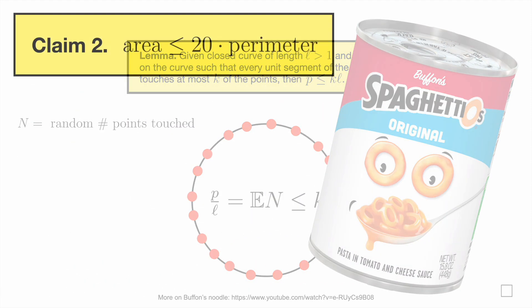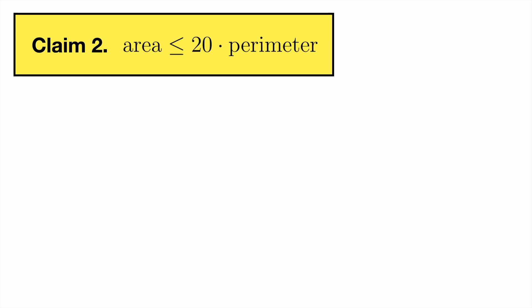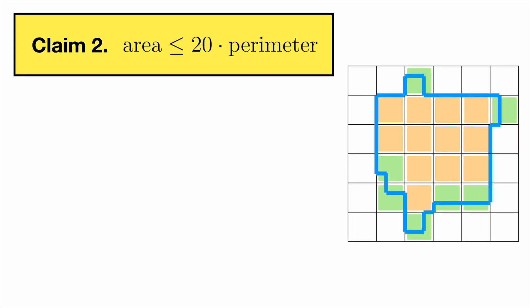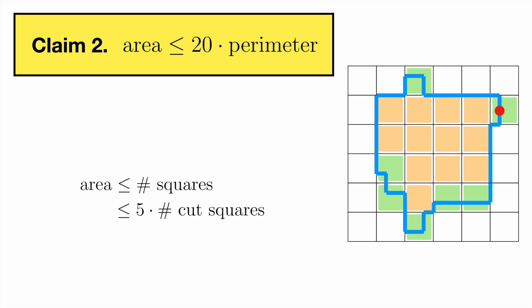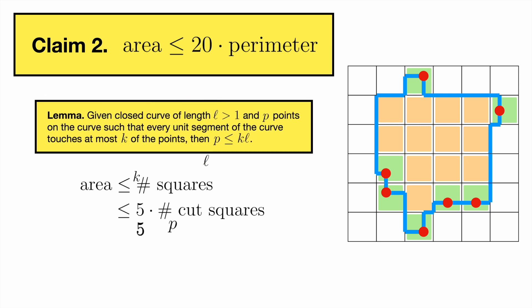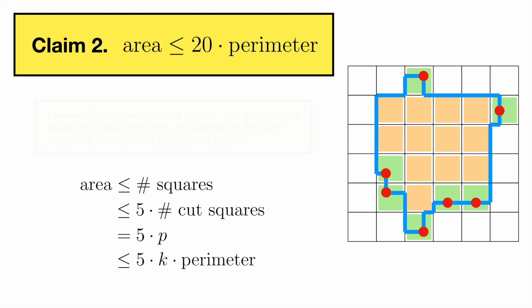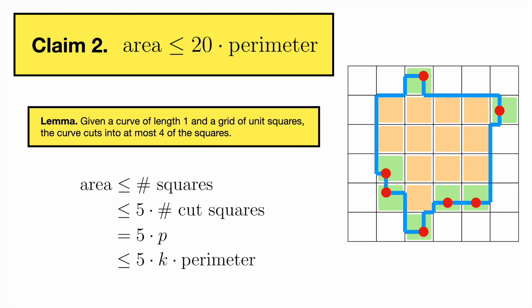We're now ready to prove our claim. First, our district is covered by unit squares, so the area is at most the number of squares. Next, in order to be majority-minority, at least a fifth of these squares need to be cut squares. In each cut square, we select a point on the district boundary and apply Buffon's SpaghettiO. Finally, by our other lemma, every unit segment of the boundary touches at most four of these points, so we're done.